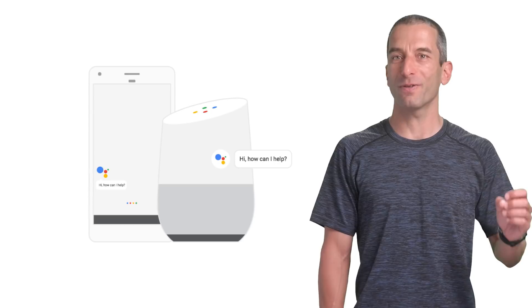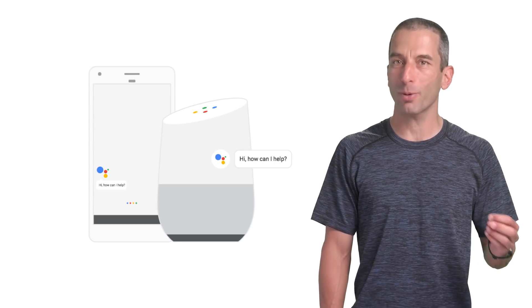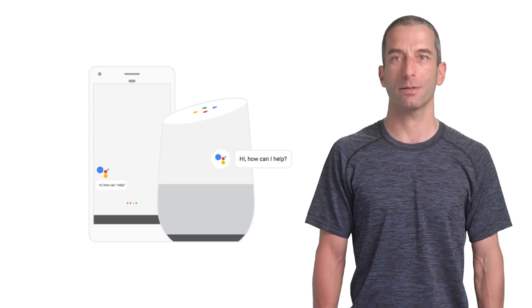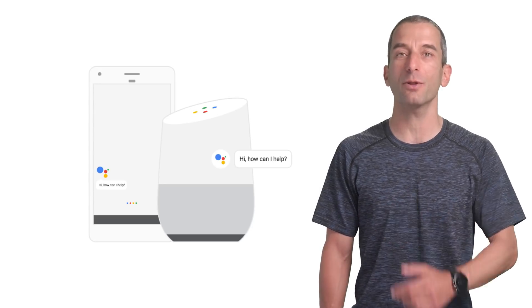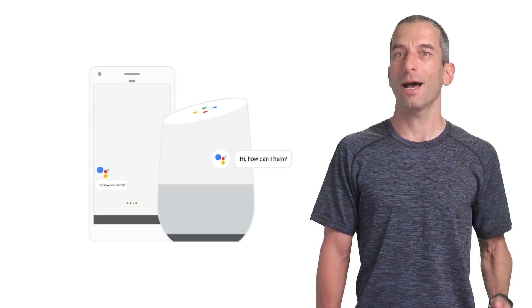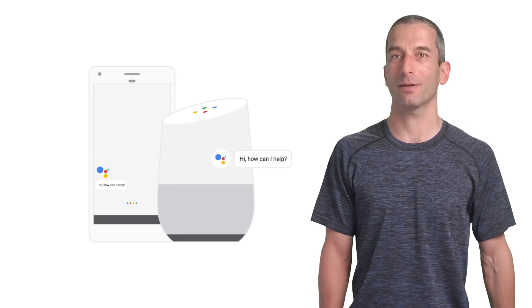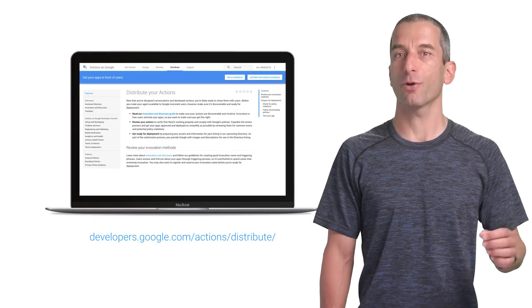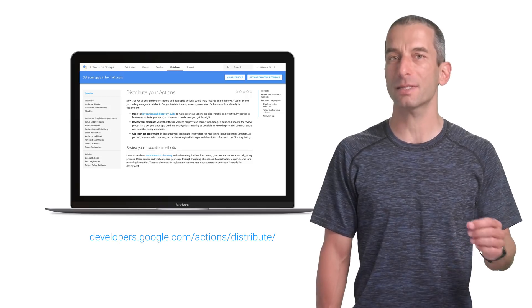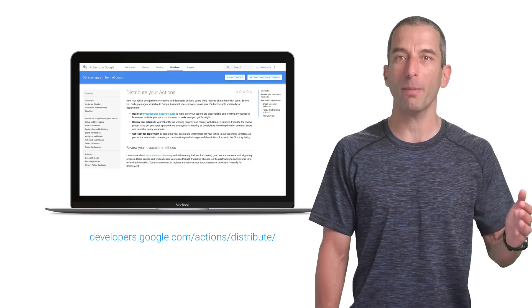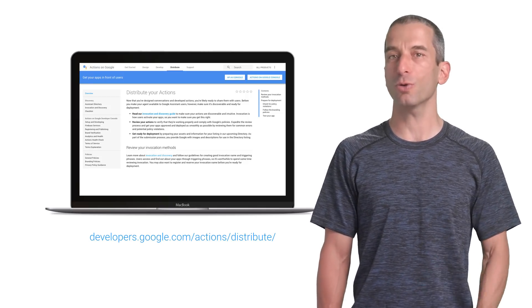After you design a conversation and develop apps, you're probably ready to share them with users. Before you make your app available to Google Assistant users, let's see how to prepare for deployment. When you submit your app for approval, Google tests and verifies that they meet the minimal set of launch requirements before publishing them to users. Let's focus on the top three pitfalls you need to avoid in order to pass the review process.